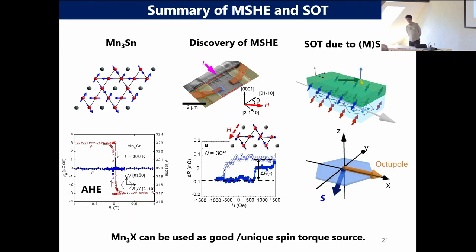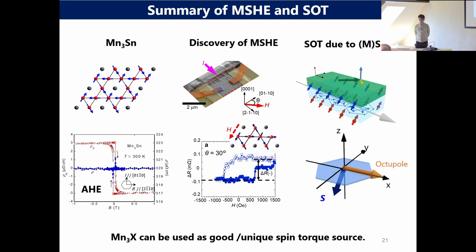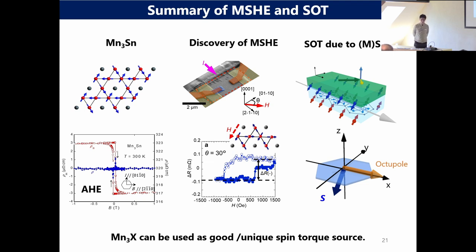From this experiment, we mapped the relationship between the magnetization direction of Mn3Sn and the accumulated spin. The orange arrow is the magnetic order direction — the octupole direction of Mn3Sn. By rotating this octupole direction using a magnetic field, we can control the direction of the octupole. Depending on this orientation, the accumulated spin vector changes, and as a result the spin-orbit torque also changes. We roughly estimated the conversion efficiency — these values are several times larger than typical transition metals. So this material is a very good material for spin-orbit torque. The key message: Mn3Sn, a non-colinear antiferromagnet, can be used as a very unique and efficient spin-torque source.